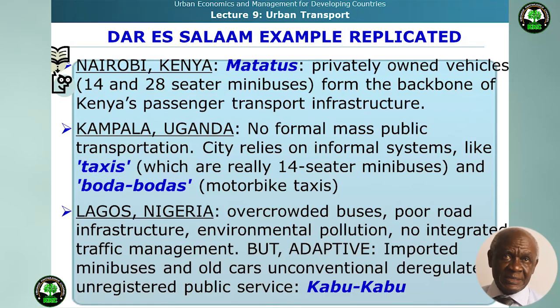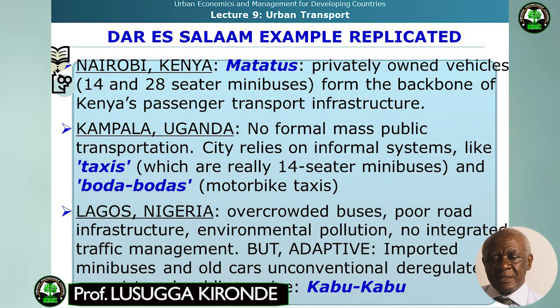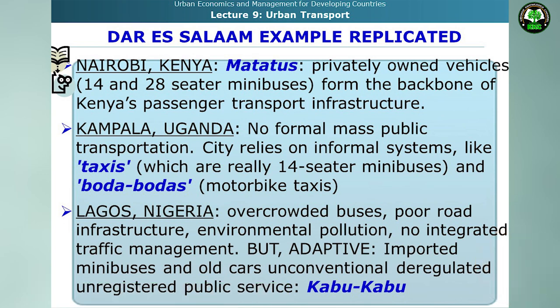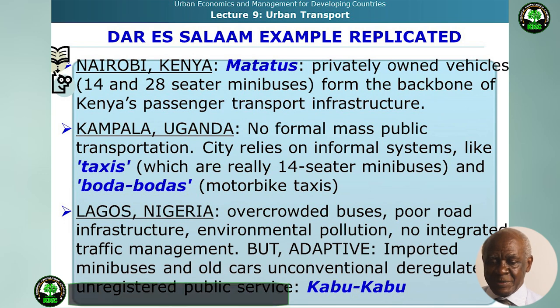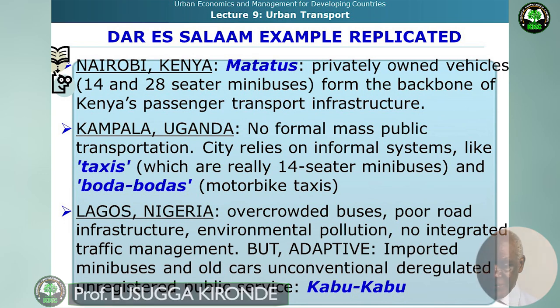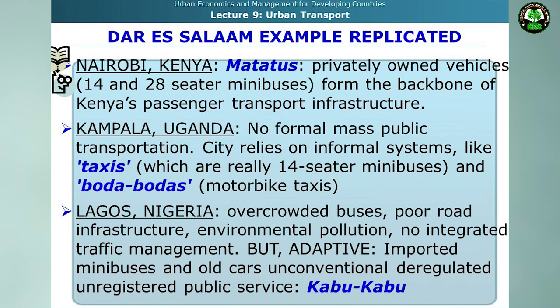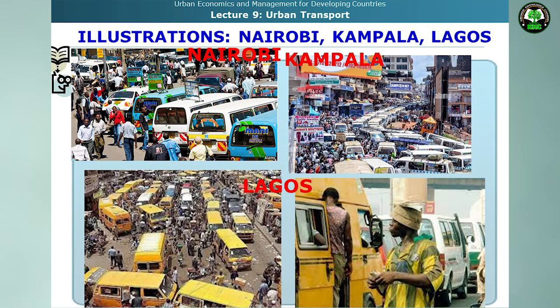The Dar es Salaam example is duplicated in all major cities of sub-Saharan Africa. In Nairobi, Kenya, Matatus — privately owned vehicles, mainly 14- and 28-seater minibuses — form the backbone of passenger transport. In Kampala, Uganda, there is no formal mass public transportation; the city relies on informal systems like taxis, which are nearly 14-seater minibuses, and Boda Bodas, which are motorbike taxis. In Lagos, Nigeria, overcrowded buses, poor road infrastructure, and environmental pollution without integrated traffic management is the order of the day, but they adapt using imported minibuses and old cars in services known as Kabukabu. These photographs show the situations in Nairobi, Kampala, and Lagos.